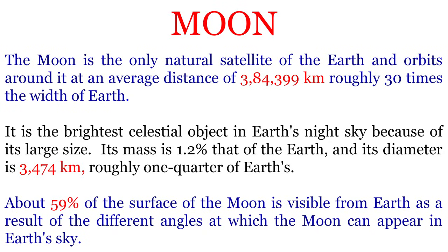Its mass is 1.2% that of the Earth and its diameter is 3,474 km, roughly one quarter of Earth's. About 59% of the surface of the Moon is visible from Earth as a result of the different angles at which the Moon can appear in Earth's sky.